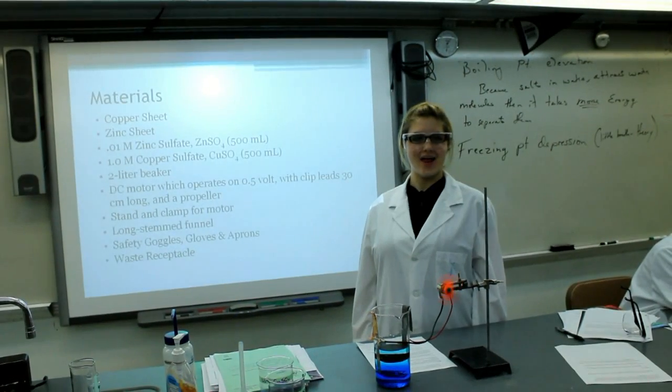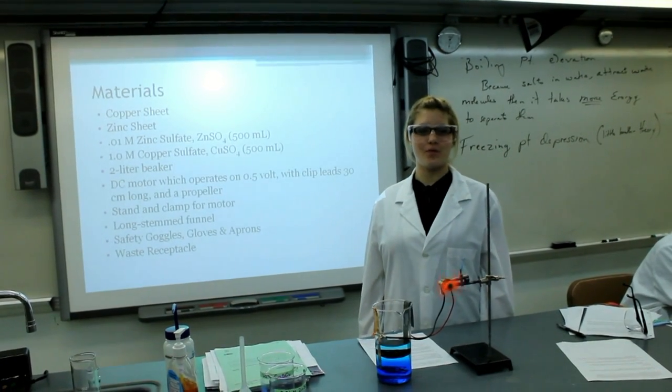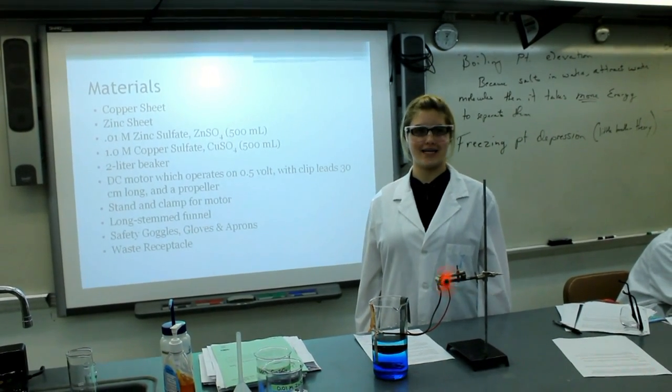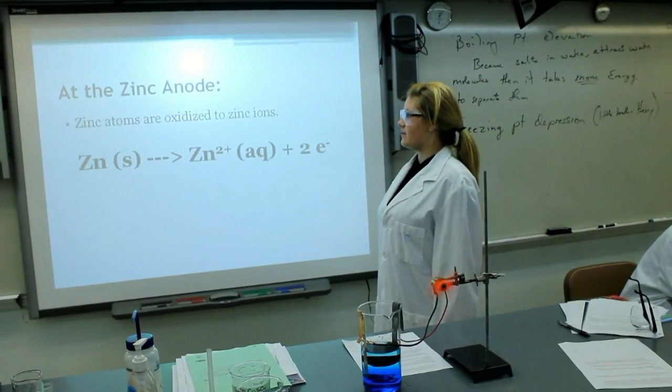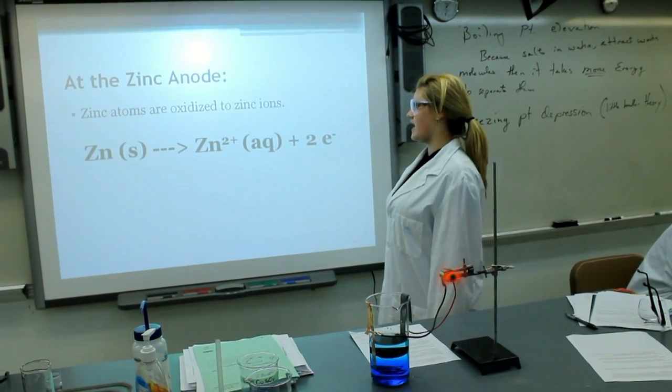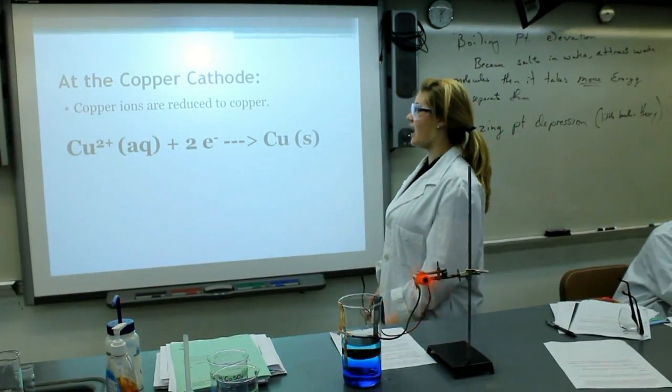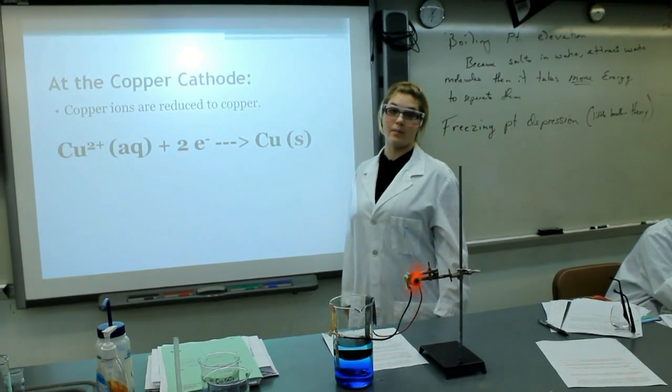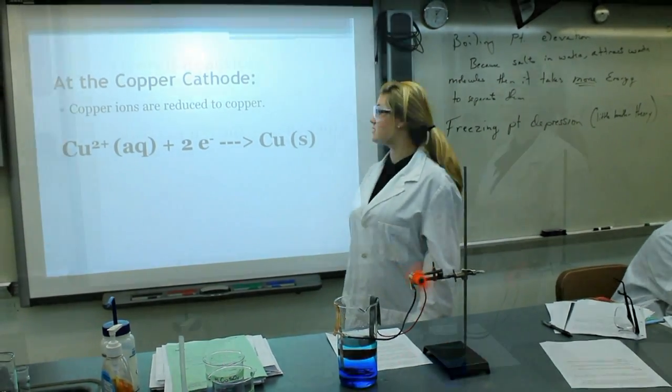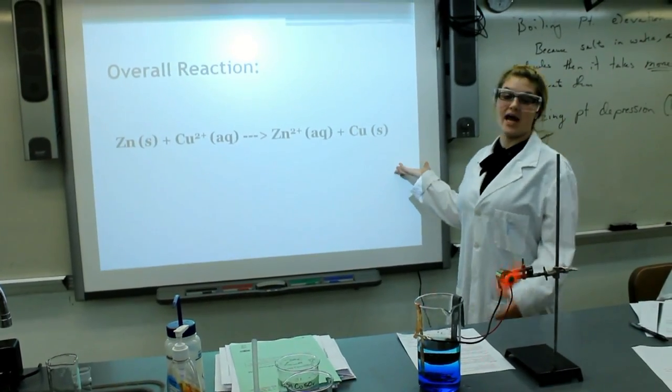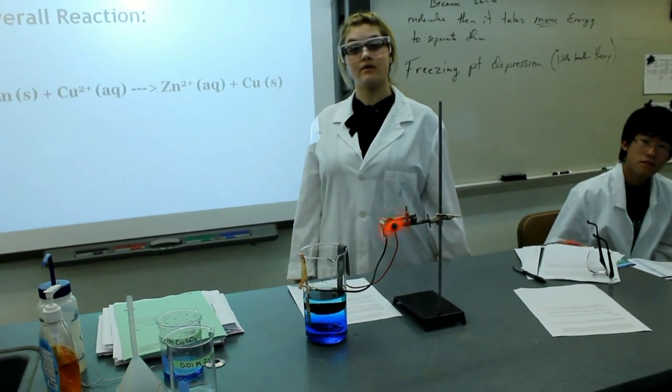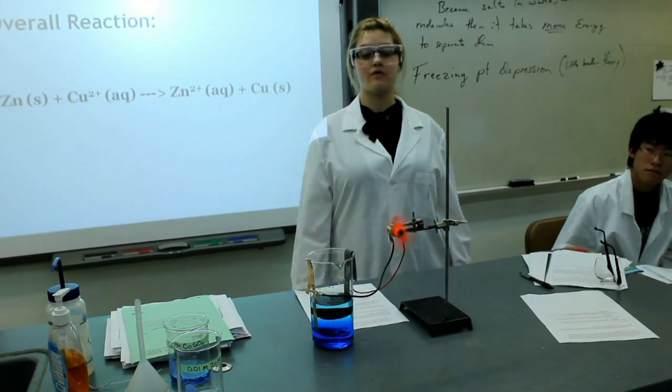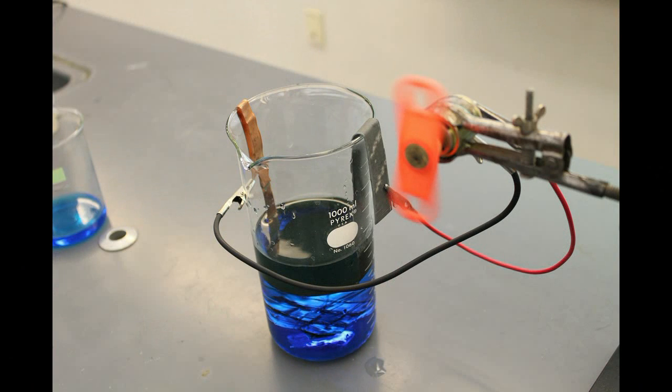In this voltaic cell, electrons are able to flow through the wire from the easily oxidized zinc to the less easily oxidized copper. At the zinc anode, zinc atoms are oxidized to zinc ions and lose two electrons. At the copper cathode, copper ions are reduced to solid copper as they gain two electrons. This is the overall reaction and as you can see, it produces enough current or movement of electrons to power a small motor for over an hour.